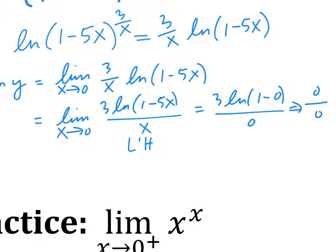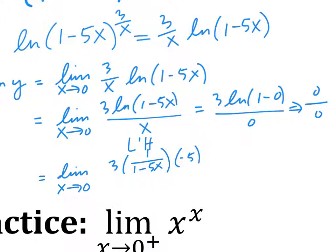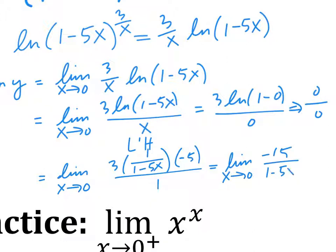L'Hôpital's rule: take the derivative of the top, take the derivative of the bottom. The derivative of natural log gives 1 over whatever that is, then apply chain rule and multiply by negative 5. Derivative of the bottom is just 1. So this simplifies to the limit as x goes to 0 of negative 15 over (1 minus 5x). Plugging in 0 gives negative 15.